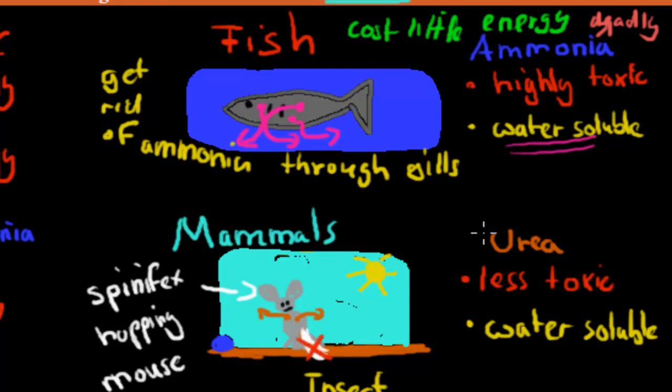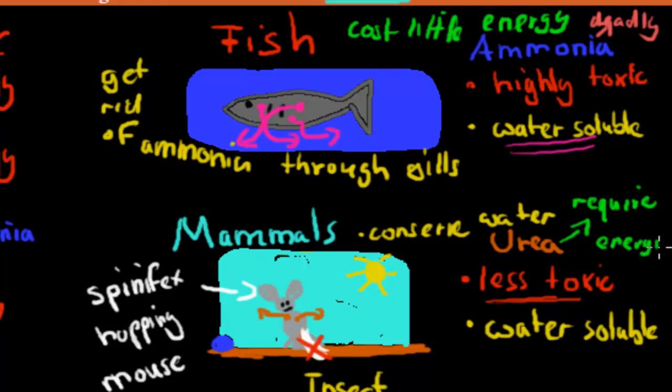What it will do instead is hold on to its nitrogenous waste in the form of urea. The good thing about urea is it's less toxic. And it's water soluble, so if the mouse urinates once or twice every day, that's fine because it can hold on to urea and get rid of it when needed. That's a way it can conserve water. If it produced ammonia, it would have to urinate constantly, which would be too much water loss. But the negative is that urea requires energy to make. But it has to do that, otherwise it would die from the ammonia.